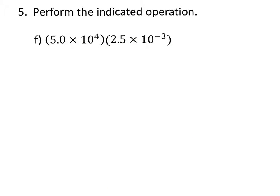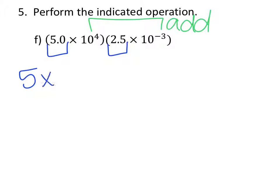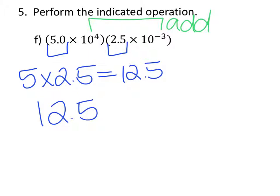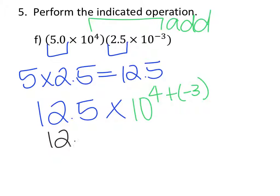To multiply numbers in scientific notation, the exponents do not need to be the same. All we have to do is multiply the numbers and then add the exponents. So 5 times 2.5 equals 12.5. We have 12.5 times 10 to the — add the exponents — so that's going to be 12.5 times 10 to the first.